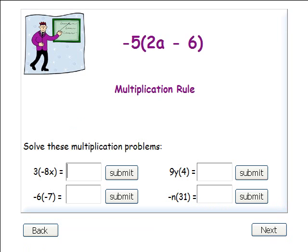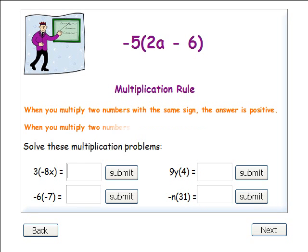To show how the distributive property is used, I will simplify this expression, negative 5 times 2a minus 6. But first we need to know the multiplication rule. When you multiply two numbers with the same sign, the answer is positive. When you multiply two numbers with different signs, the answer is negative.